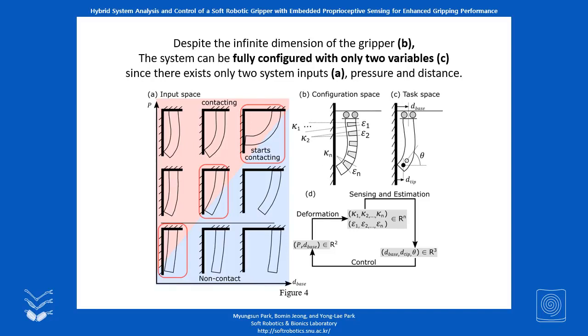As depicted in figure C, two task space variables were defined. One is d-base, which is the distance between the actuator and the object, and another is theta, the orientation of the end effector.